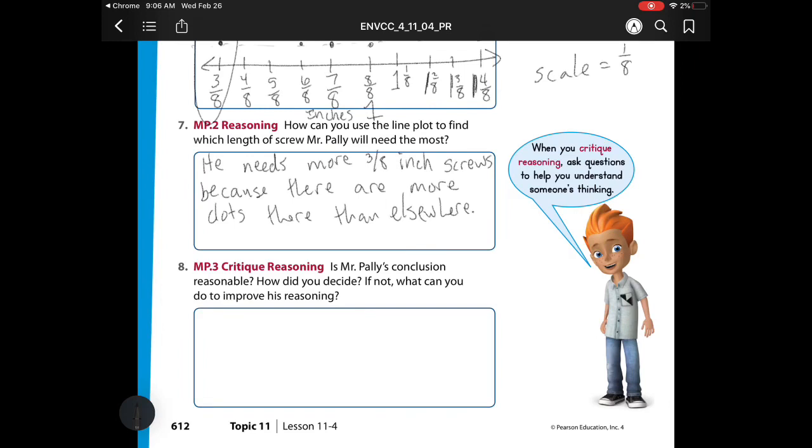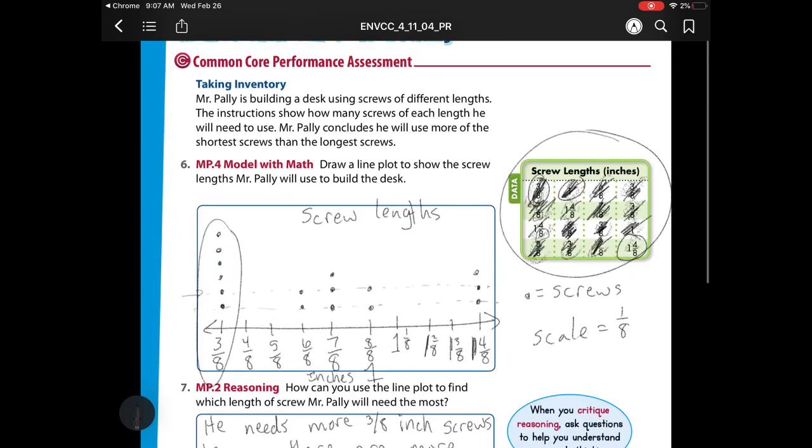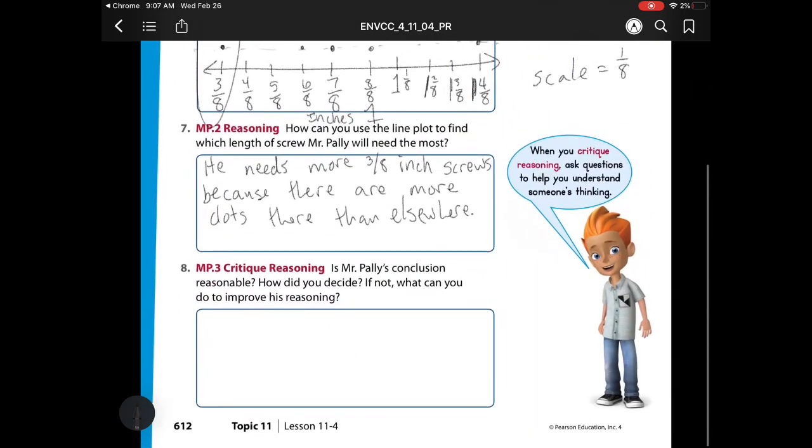So on to our last one, our critical reasoning. Is Mr. Polly's conclusion reasonable? How did you decide? If not, what can you do to improve his reasoning? So if you remember at the very beginning, he said that he'll need to use more of the shorter screws than the longest screws. So is his reasoning correct? Yeah, it is reasonable because we have more dots in that small section. So he needs to use more of that shortest length.